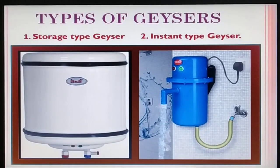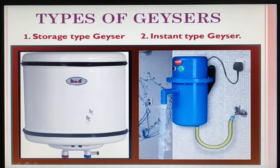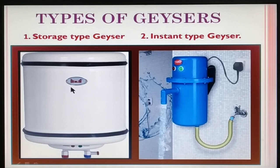There are different types of geysers — storage type and instant type. There is a water inlet and a water outlet, indicated by red and blue markers. The thermostat maintains the desired temperature at 60 degrees.